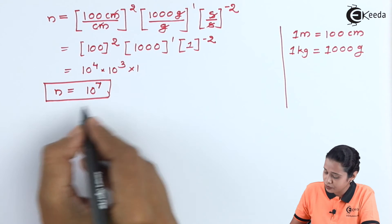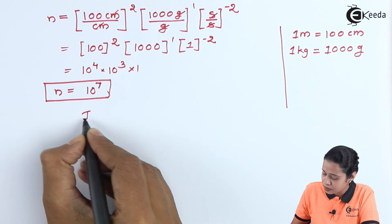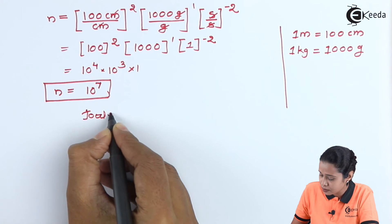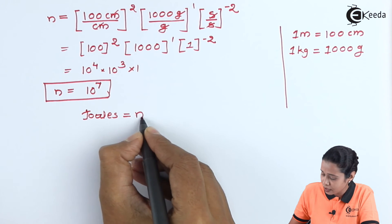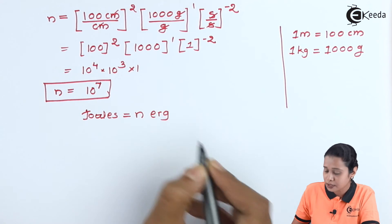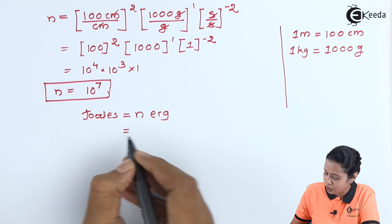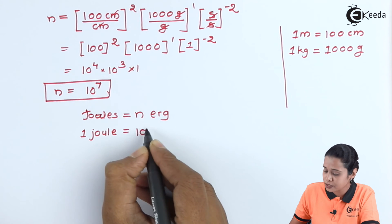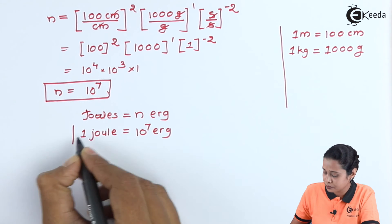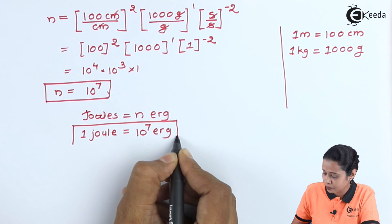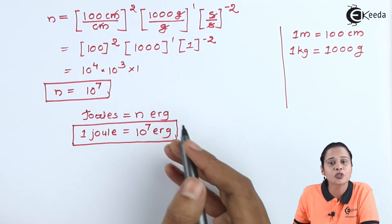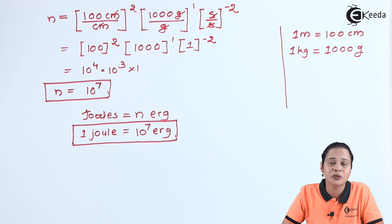Substitute this value in equation 1. We have joules is equal to n erg. Substituting the value of n, we get 1 joule is equal to 10⁷ erg. Hence, in this way we can convert joules into erg. Thanks for watching this video. Stay tuned with Ekida and please subscribe to Ekida.